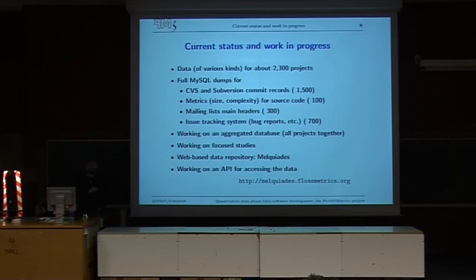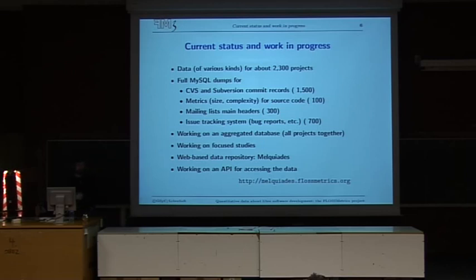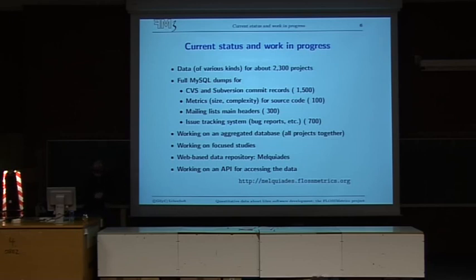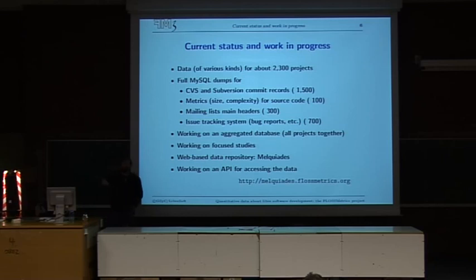Basically, what we offer is full MySQL dumps for CVS and Subversion commit records — so the full history of the project. Metrics on size and complexity for some code — we still only have around 100 projects with that kind of information, but it's quite interesting: that's every release of every file of all the projects through all the history, meaning you can track complexity and size of a project over time. We are also providing mailing list archives, which are very useful for tracking interrelationships and communication patterns in the project. And issue and bug-tracking systems for something like 700 projects right now. We are working on aggregating all of this — hopefully in a couple of weeks we are going to offer a complete dump of all the projects in the same database, which allows for cross-querying things in different projects.